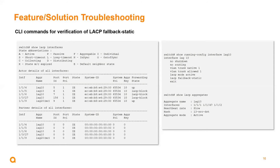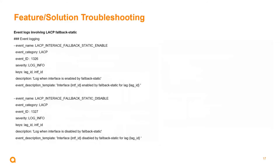Troubleshooting is pretty simple. There are debug commands for link aggregation and diag dump commands. Primarily, use 'show LACP interfaces' to make sure you're seeing the right states. The expected output shows multiple interfaces active in lag 10, but only one brought up at a single time. There are also two new events added for the LACP Fallback Static feature, which show when the feature is enabled and disabled.